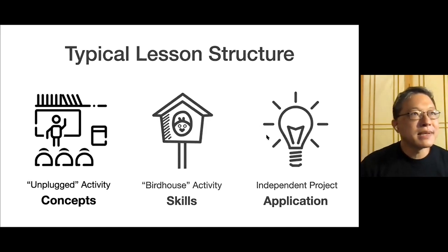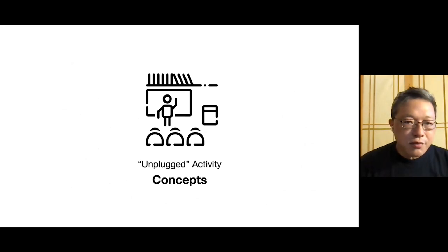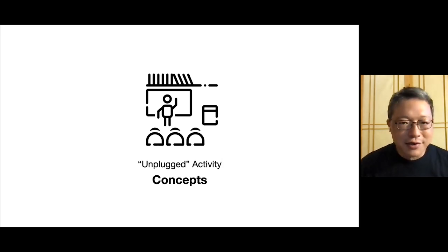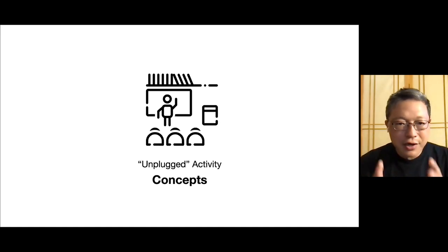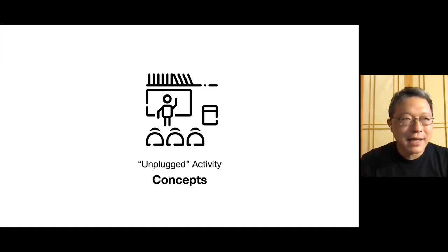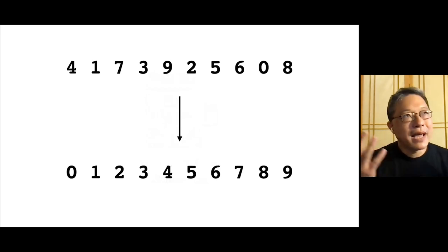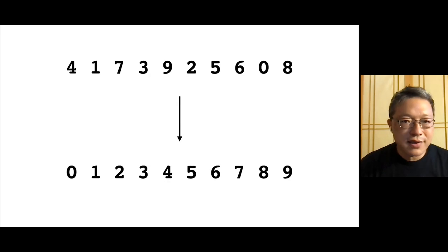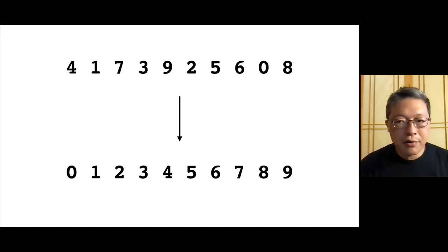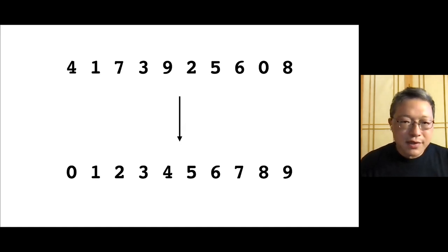An unplugged activity is one that traditionally takes place without a computer. I find that when kids sit in front of an IDE, they get tunnel vision on the code and syntax, but it's really important for kids to get the concepts first. For example, if we're talking about sorting, we have an unsorted array and want to move to a sorted one. I usually start the conversation by asking, 'How might we go about doing this?' I give kids a stack of papers or other objects to sort.